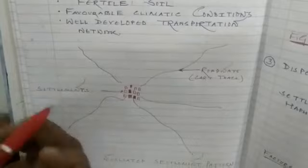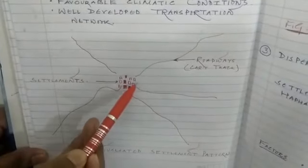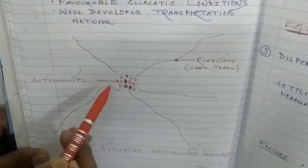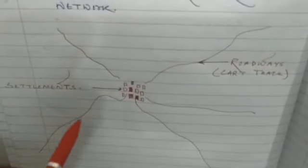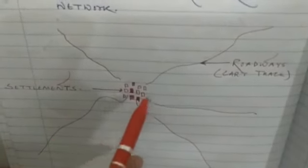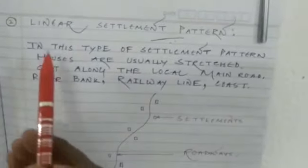Now look at the diagram. You can see that settlement blocks are found in clusters — they are compact. This type of settlement is generally found at the junction point of roadways. You can see different types of roadways coming from different directions, meeting at a point, with settlements clustered and compact around that meeting point.